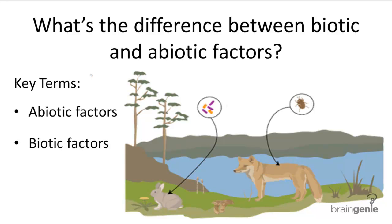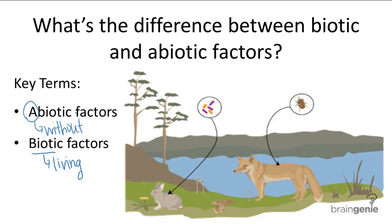Both abiotic and biotic factors are crucial in an ecosystem. Biotic means living — think bio, biology, life. Abiotic: 'a' means without, like asymmetry meaning without symmetry, so abiotic would be without life, or non-living.